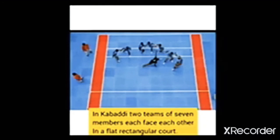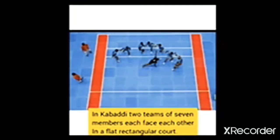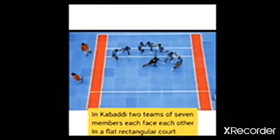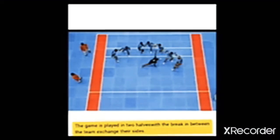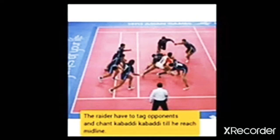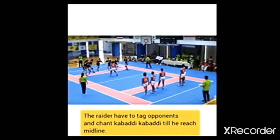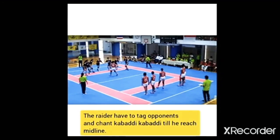Now we will summarize how to play kabaddi. In kabaddi, two teams of seven members each face each other in a flat rectangular court divided by a midline. The game is usually played in two halves with a half-time break in between. After the break, the teams exchange their sides of the court. To play the game, each team sends raiders — their players — across the midline to the other team's side.